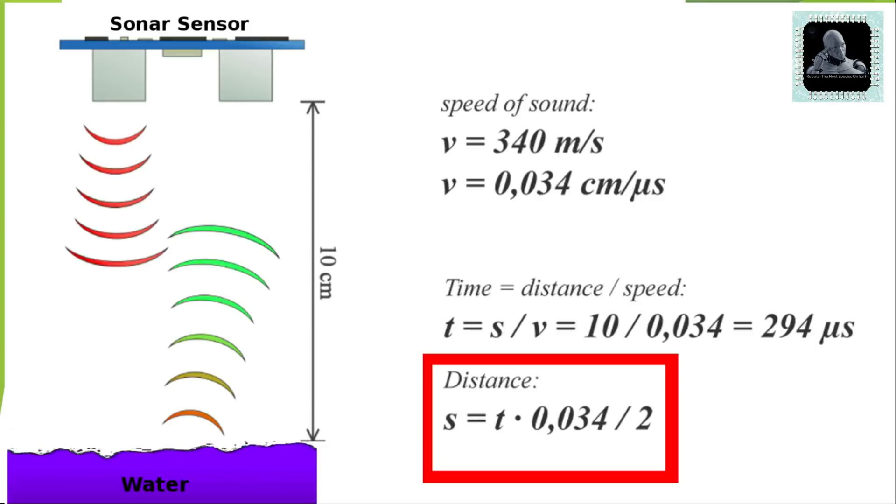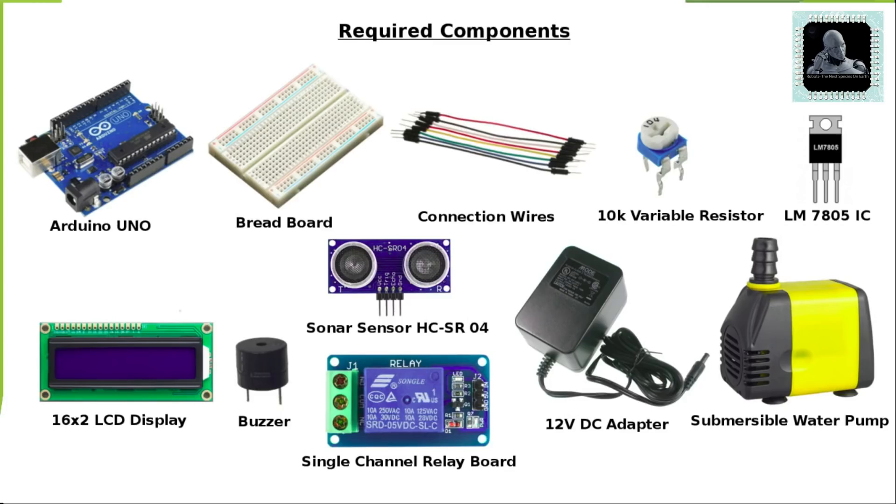Now let's move to the components required to build this project. You can purchase all the components shown here from third-party vendors like Amazon, eBay, etc. Let's move to the circuit diagram.